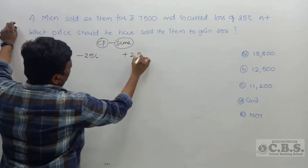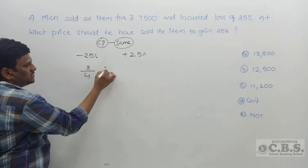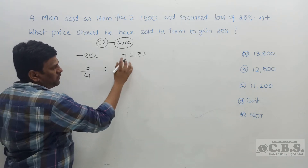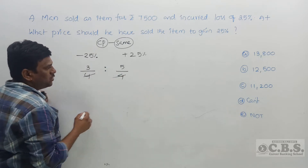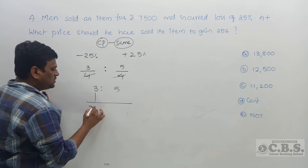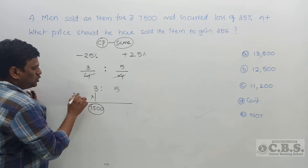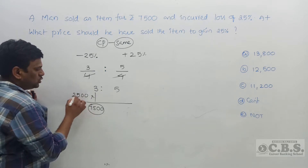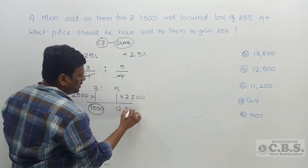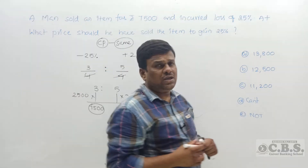25% loss means 4 parts cost price, 3 parts selling price. 25% profit means 5 parts cost price, so selling price is 5 parts. Therefore the ratio is 3 to 5. The first selling price is 7,500. To get 7,500 from 3 parts, one part is 2,500. So the new selling price is 5 × 2,500 = 12,500 rupees. Option B is the right answer.